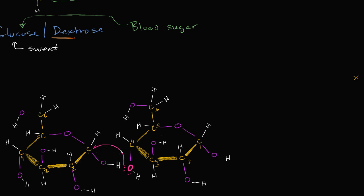As the nucleophilic attack occurs, the oxygen uses a lone pair to form a bond with the carbon, sharing those electrons. The carbon can then let go of another bond — releasing both electrons from that bond. We could imagine that a hydrogen ion from a hydronium ion in solution is picked up by those electrons.